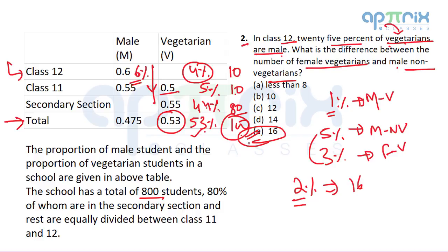If you are good in percentages and averages, this question is easy to do; otherwise you need to make the table. If you find making the table comfortable, do that. But I can do it mentally because I can calculate percentage values very quickly. Even if you fill up the table, fill it with percentage values, not absolute values. For example, this particular value is 5.5% of total. We calculated this is 45% of total, and this is 47.5%. If you fill values in terms of percentage out of total and need absolute values, simply multiply by 8.